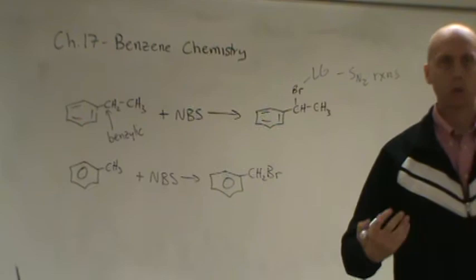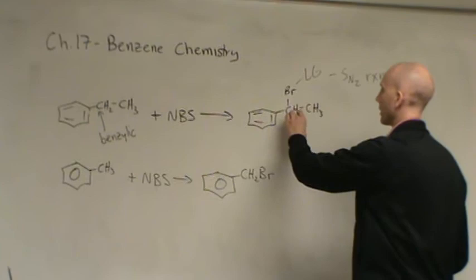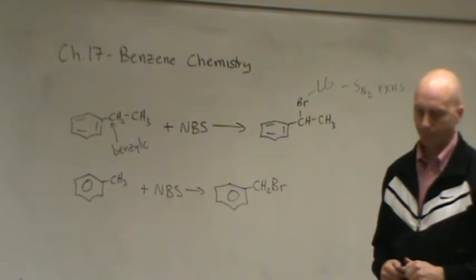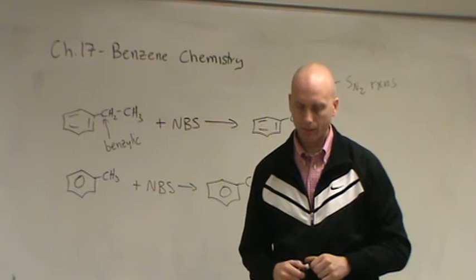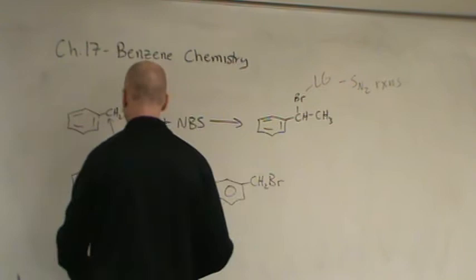And one of the big things when you put a bromine on a carbon is that you've created a good leaving group. And so it sets you up to do SN2 reactions if you wanted to. That is, if I had a nucleophile, I could bring it in and attack, kick off the bromine, and so it's a way to put nucleophiles on that carbon.